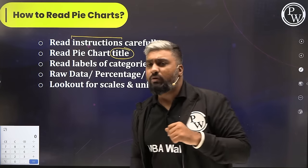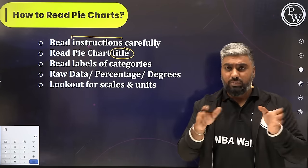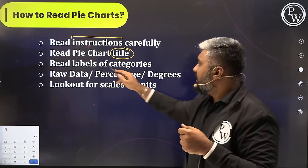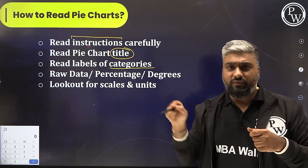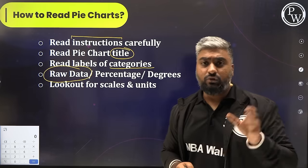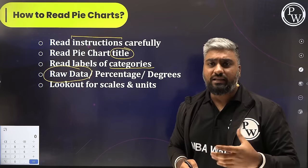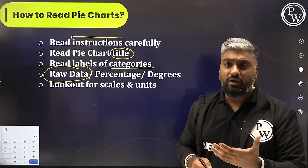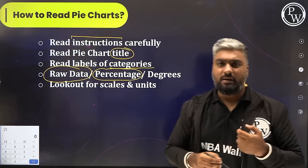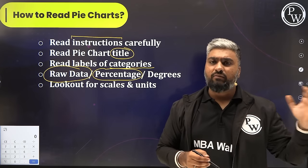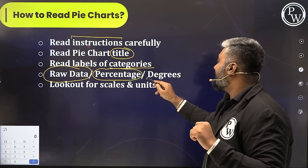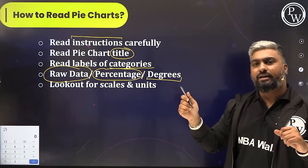Next, read the title of the pie chart — there could be multiple charts with different years, divisions, or sectors. Then read the categories: what different four, five, or six categories are given. Read that carefully. For raw data, they can give it directly — say revenue in rupees or dollars — or they could give it in fractions, either using percentage (e.g., 30% read newspaper one, 40% read newspaper two, remaining 30% don't read at all), or it could be given in degrees.